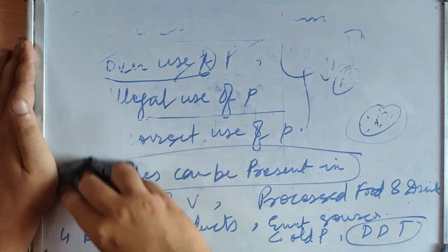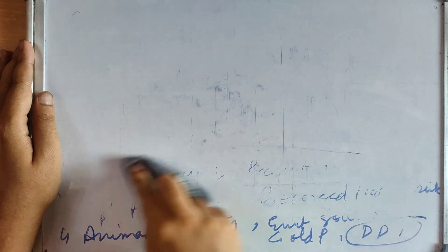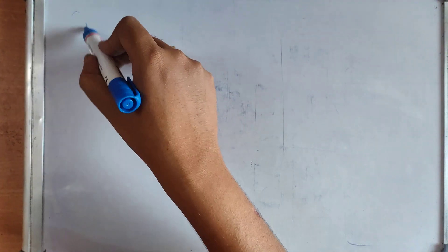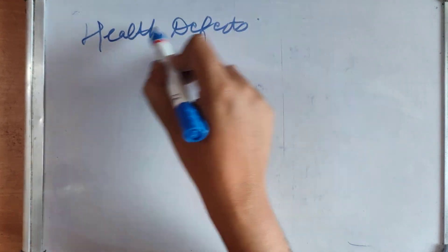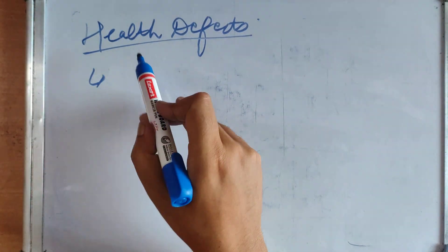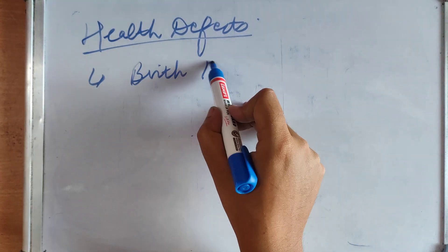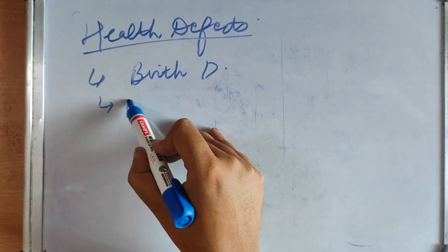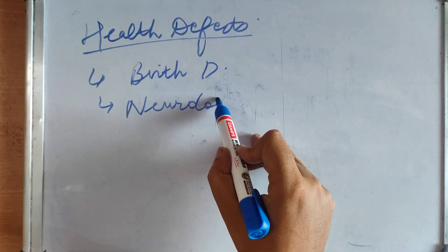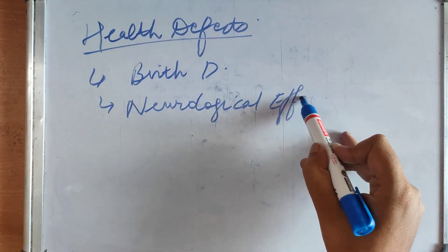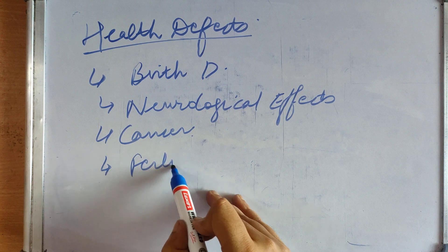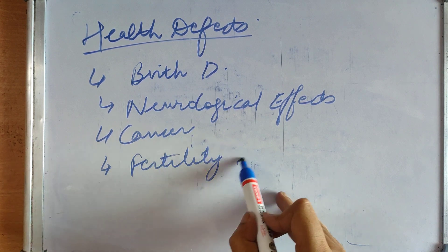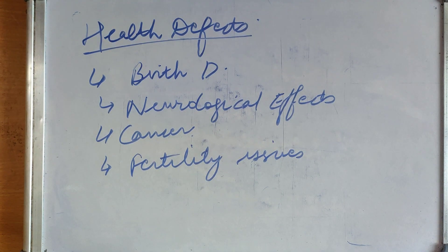Now, what are its health defects? It has many health defects also such as birth defects, neurological effects, cancer, fertility issues. These all can be due to pesticide residues.